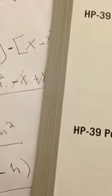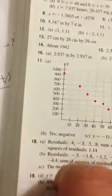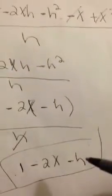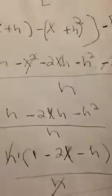Let's double-check by going to the book — page 158 or 159, section 3.2. Looking at problem 29, the book's result is 1 minus 2x minus h — the same result we got. 1 minus 2x minus h.